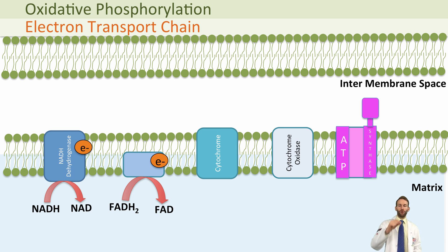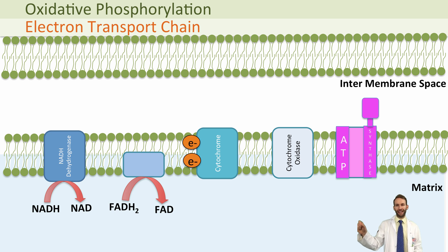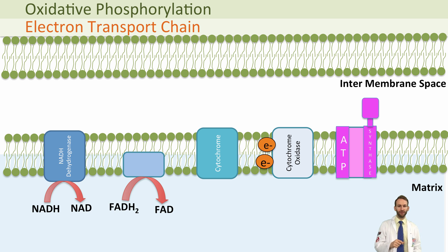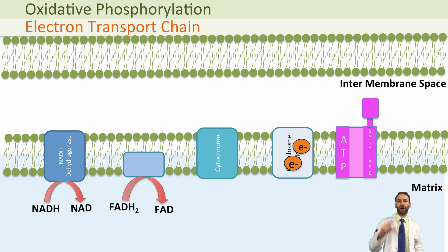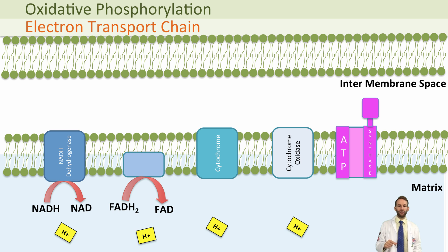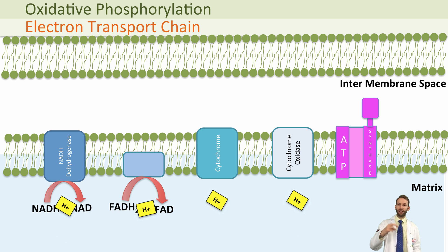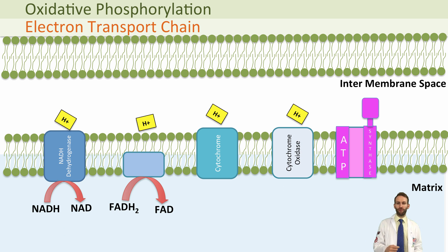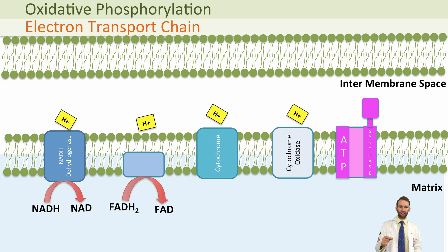These electrons will get passed down the chain of carriers, each time losing a little bit of energy. The energy is used by these carriers to pump hydrogen ions from inside the matrix to the intermembrane space. Now that may seem a little complicated, but let's have a look at this animation and talk through it step by step.